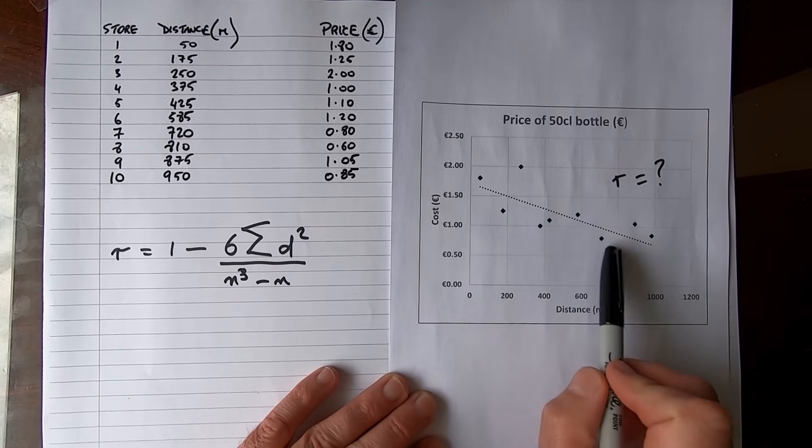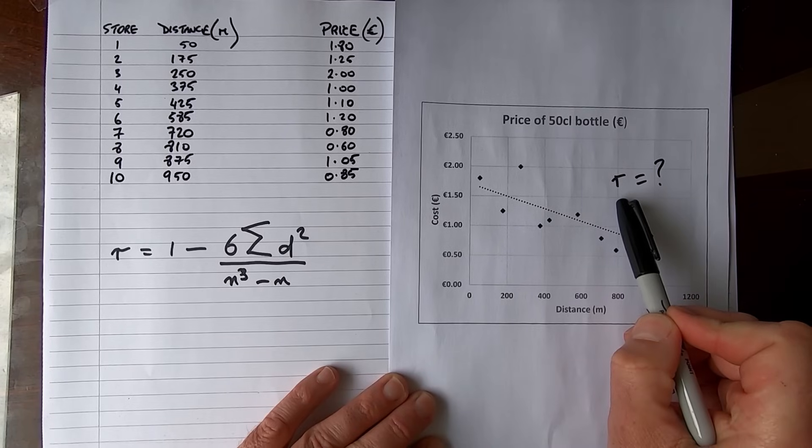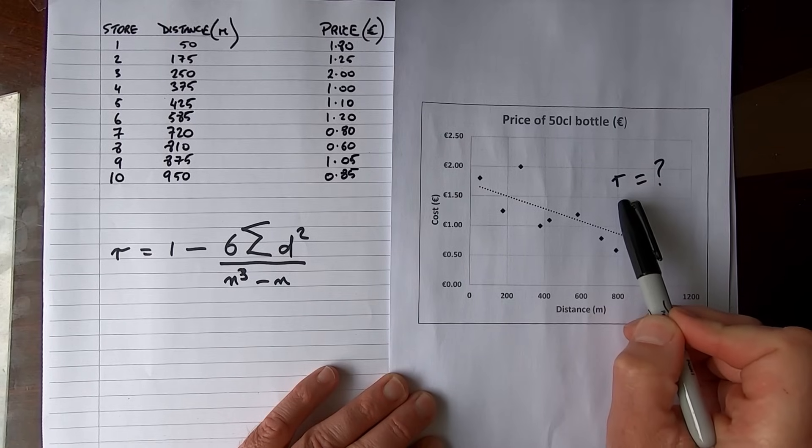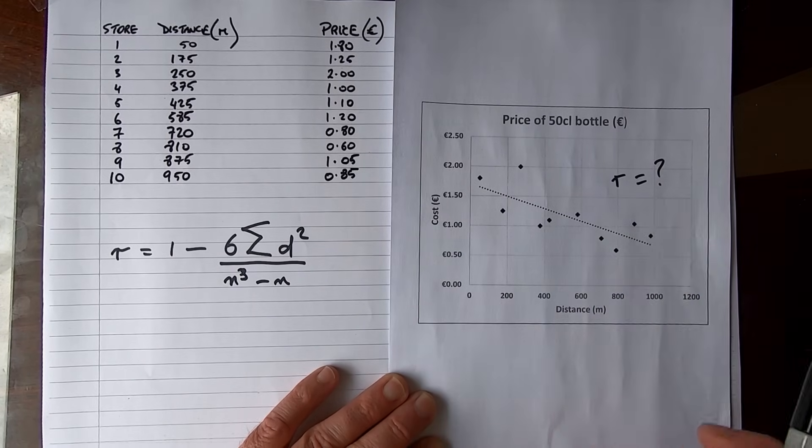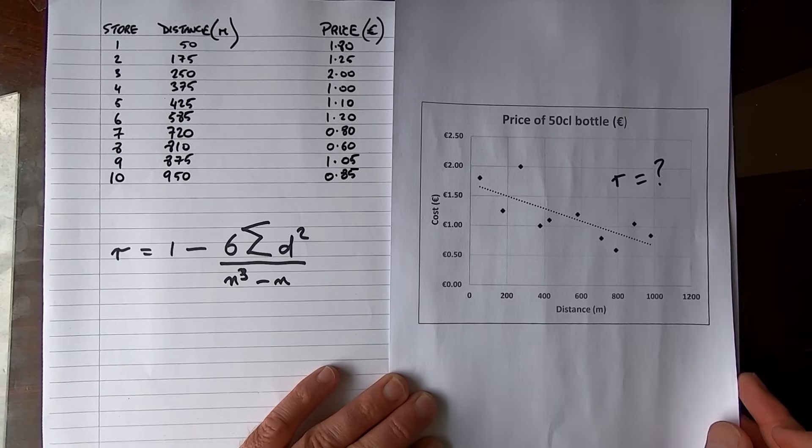So we want to know there's a visual trend there, but we want to know the value of R, which is our correlation coefficient. In this case, Spearman's rank correlation coefficient is a measure of the strength. We can see that it's a negative relationship here, so we can expect to get a negative value for R when we do our calculation.